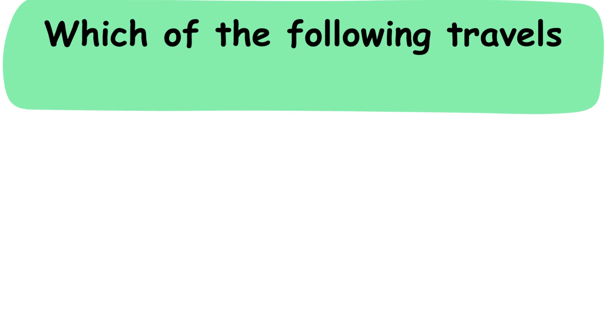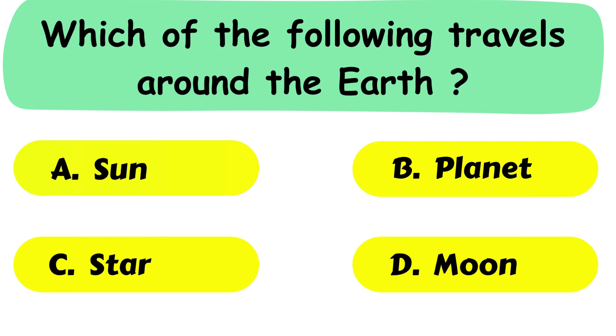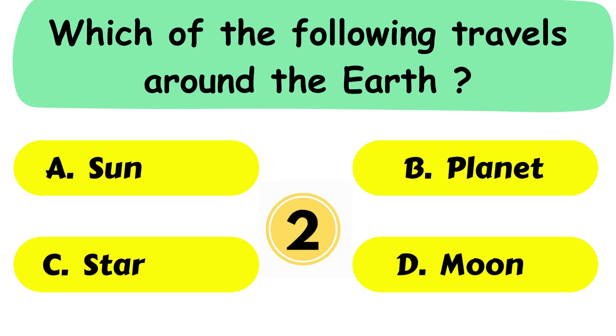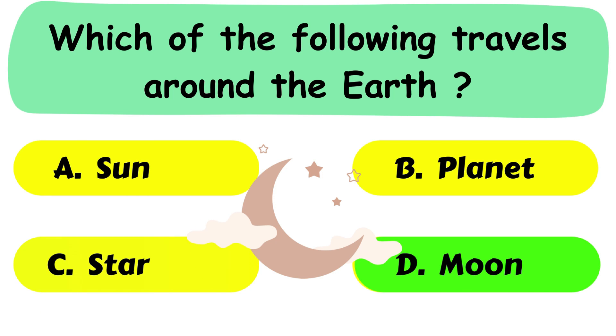Question No. 27. Which of the following travels around the earth? A. Sun. B. Planet. C. Star or D. Moon. The correct answer is option D. Moon.